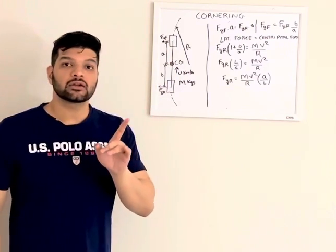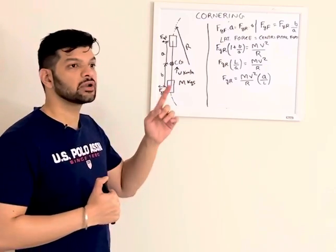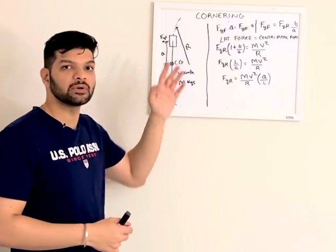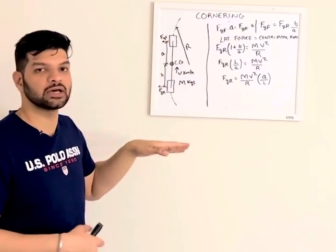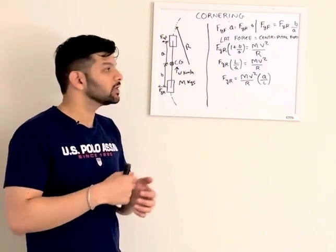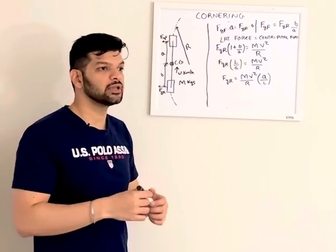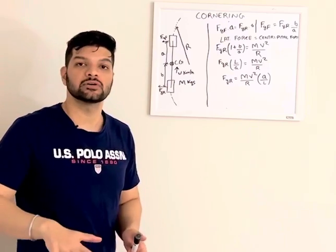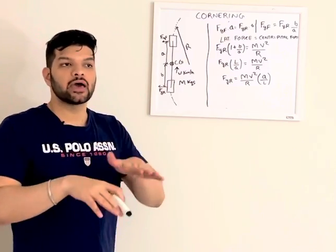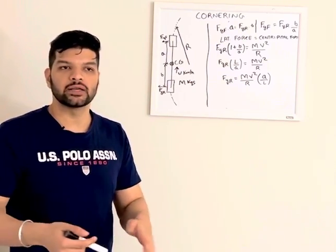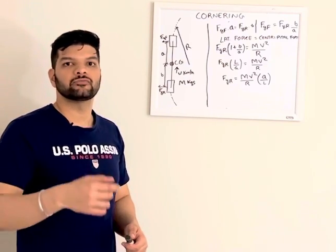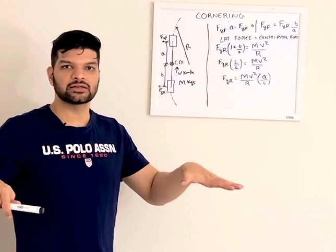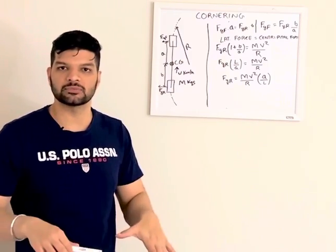First, we need to take care of the assumptions. So here we are not talking about the lateral load transfer between left and right tires, as we can see. We have combined the front two tires into one and rear two tires into one. Also, at the same time, there is one another assumption that we are considering: that the track, the entire track, has one surface level, like it's not like of varying elevations at any point. Like, for Eau Rouge, for example, it's not going like this.